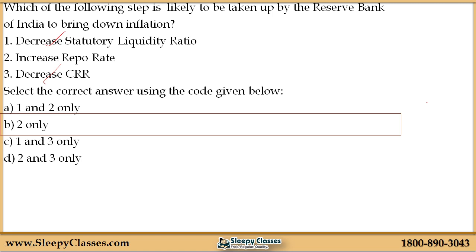So if inflation is high, RBI follows a contractionary monetary policy — increase repo rate. If you decrease SLR and CRR instead, lending will increase, money supply will increase, and inflation will not be controlled. So options 1 and 3 are wrong. Only option 2 — increase repo rate — is the correct answer.